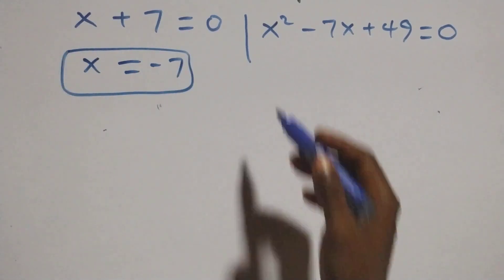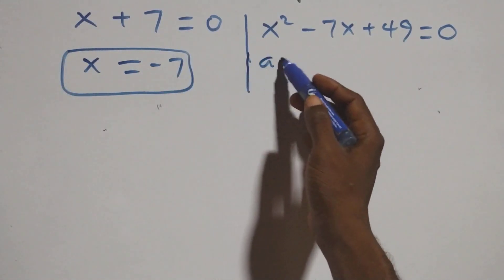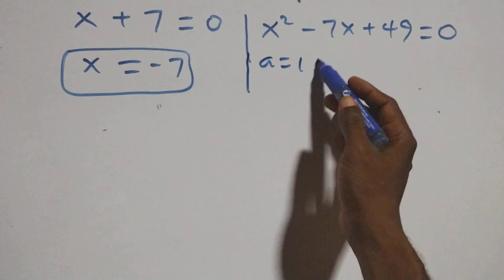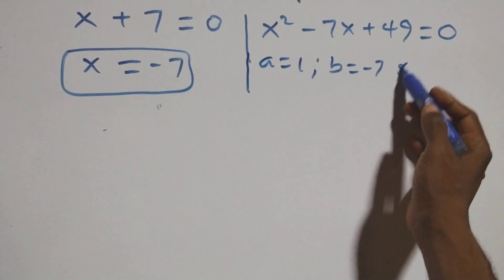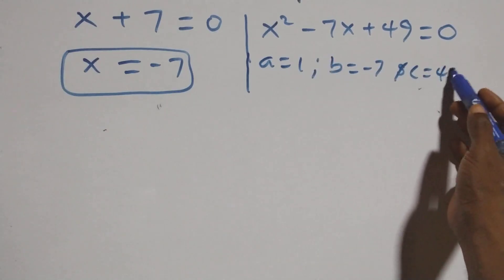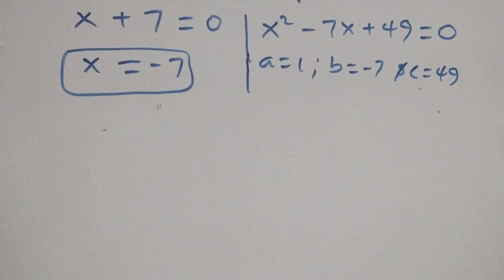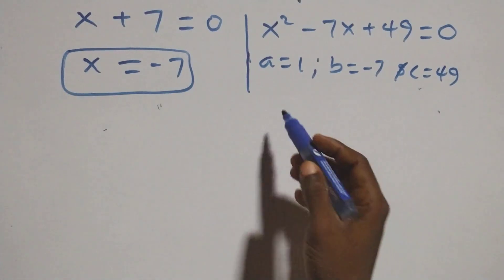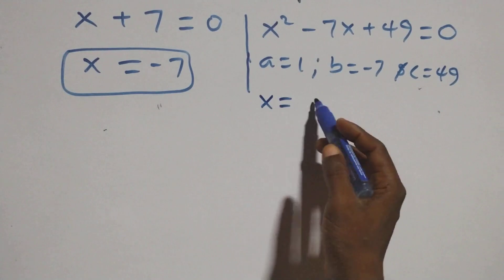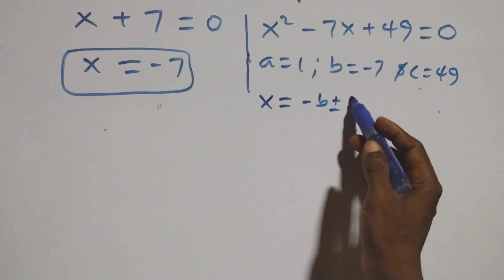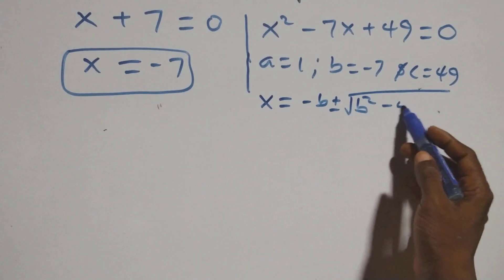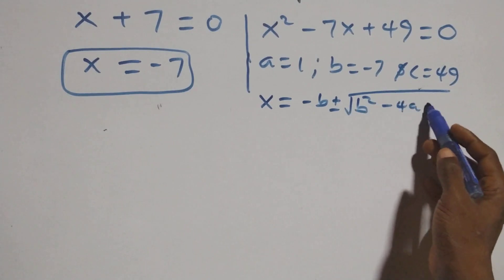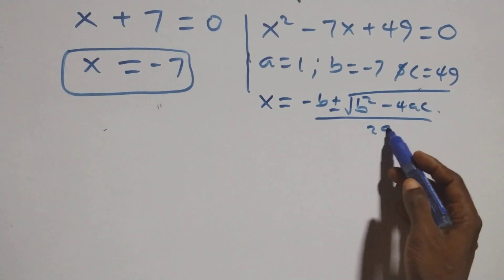And here we have a quadratic equation: a equals to 1, b equals to minus 7, and c equals to 49. Then applying the quadratic formula: x equals to minus b plus or minus square root of b squared minus 4ac, all over 2a.